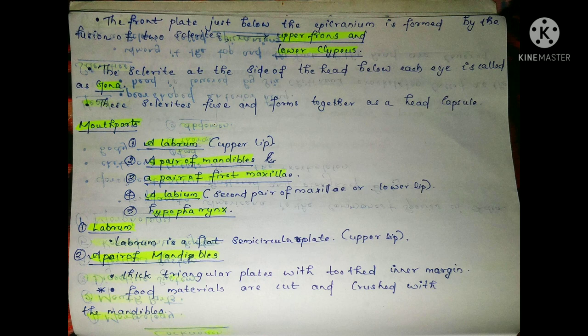The mouth parts include an upper lip and a lower lip. The upper lip is called the labrum, which is also called the upper lip portion. It is a flat, semi-circular plate that forms the labrum.